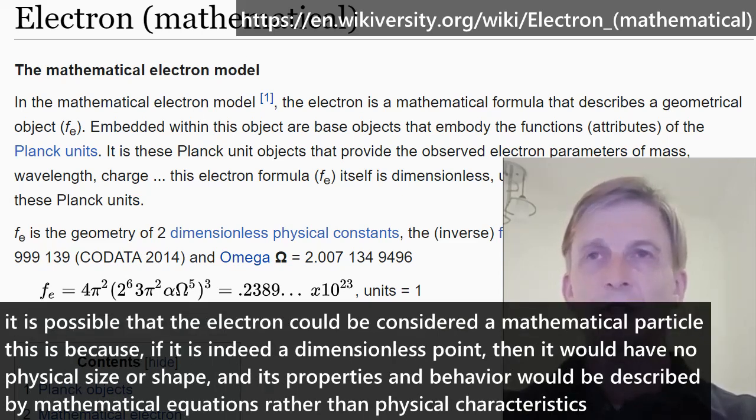It is possible that the electron could be considered a mathematical particle. This is because if it is indeed a dimensionless point, then it would have no physical size or shape and its properties and behavior would be described by mathematical equations rather than physical characteristics.